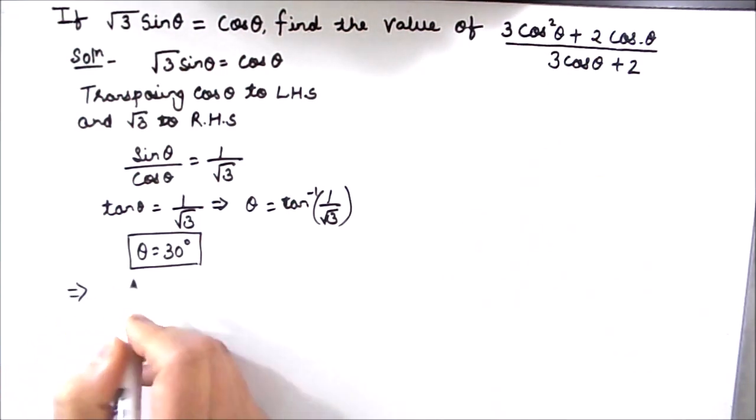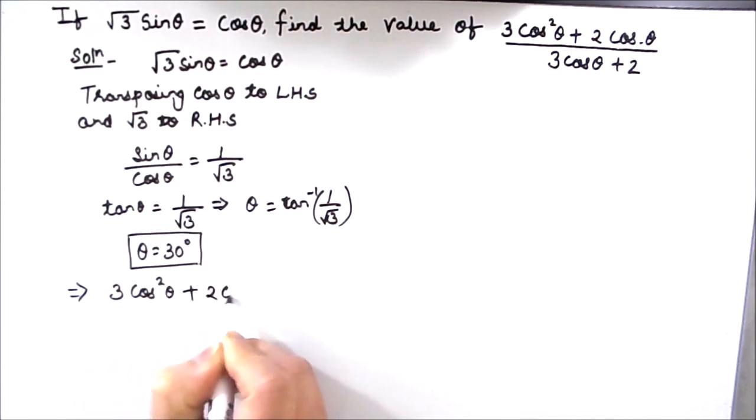So our expression is 3 cos square theta plus 2 cos theta divided by 3 cos theta plus 2. In this expression we will take cos theta common here. So this will be cos theta common in the numerator.